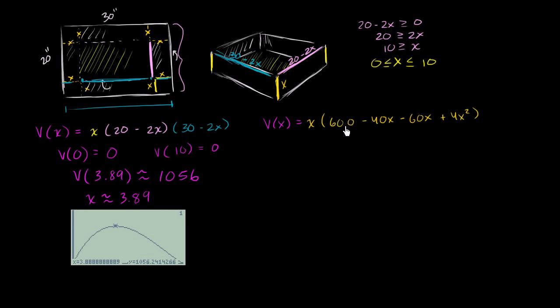So this part over here simplifies. I can change the order to 4x squared minus 100x plus 600. So I can rewrite the volume of x as being equal to x times all of this business, which is equal to 4x to the third power minus 100x squared plus 600x.